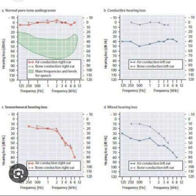In addition to pure tone audiometry, speech audiometry is usually conducted as part of a comprehensive audiological evaluation. Two types are typically performed: speech awareness or detection threshold (SAT or SDT) testing, and speech reception threshold (SRT) testing. The SAT is similar to pure tone testing except tones are replaced by words and the patient merely has to indicate when a word is heard.